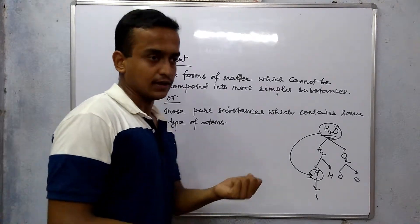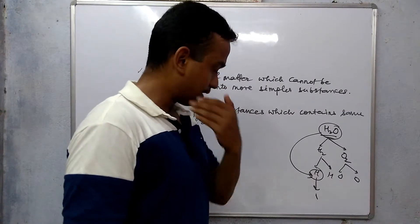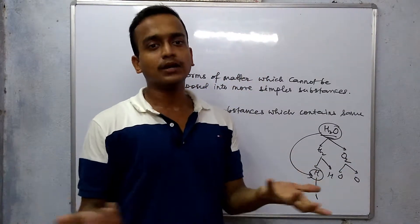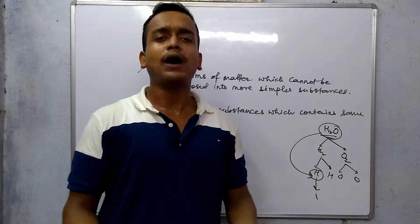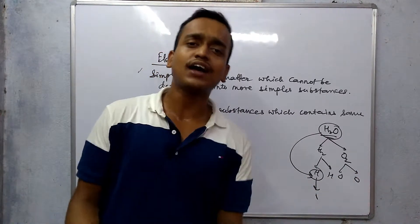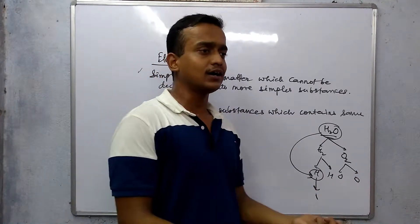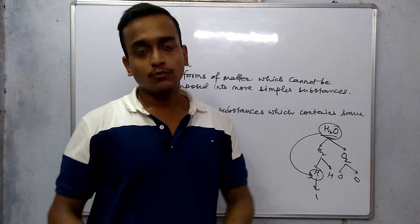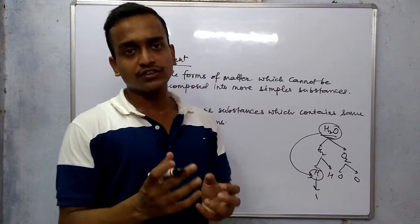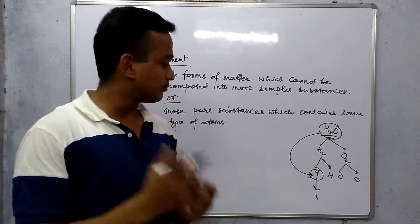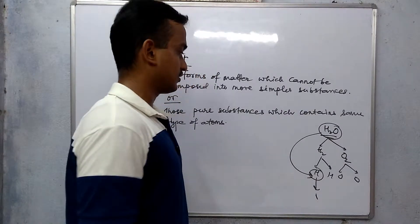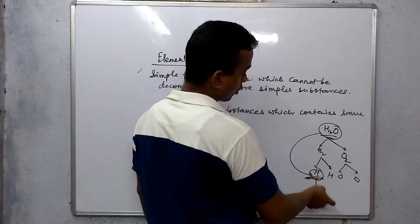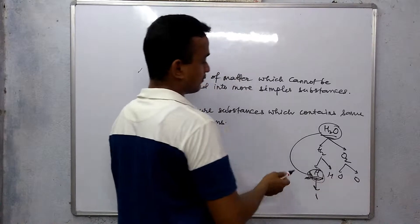An electron can be a part of anyone — maybe the electron belongs to calcium or potassium, you can't say. It will not determine a particular identity. So you cannot make it any smaller. In a simple form of matter, you cannot make it smaller — this is known as an element.